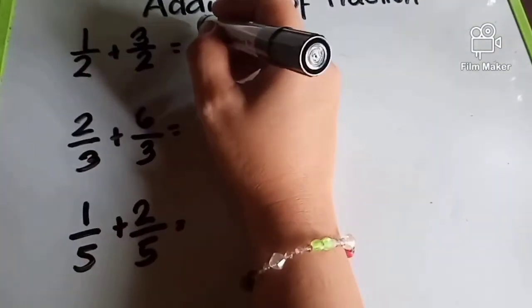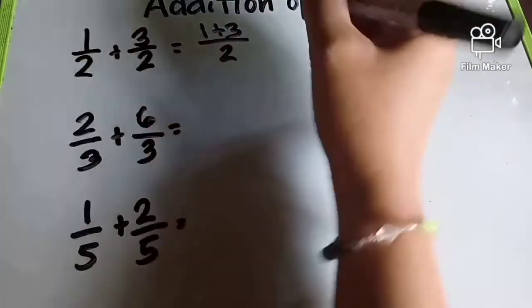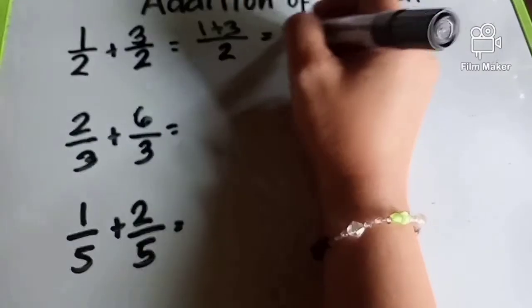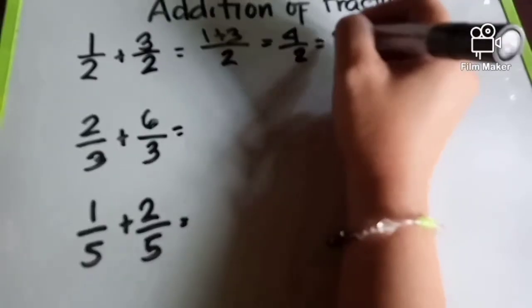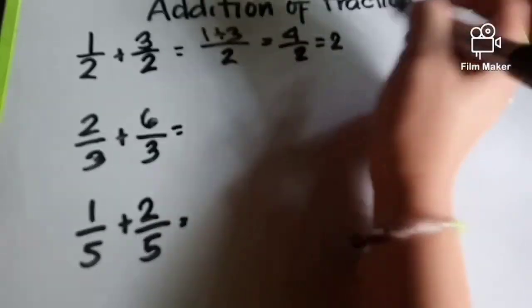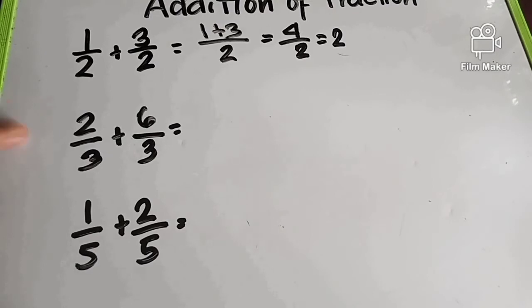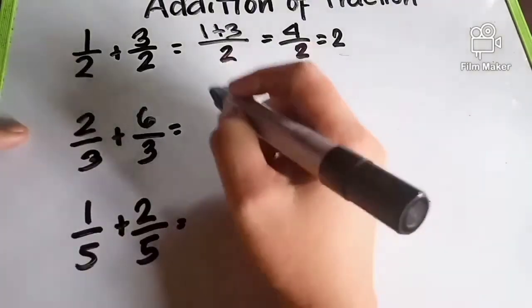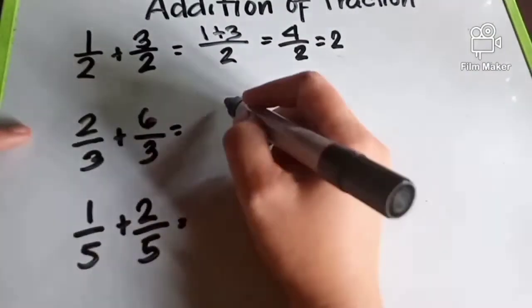Add mo lang: 1 plus 3 divided by 2. So 4 divided by 2 is equal to 2. Ito naman, 2 thirds plus 3 divided by 3. So add mo siya.